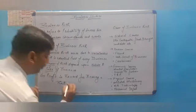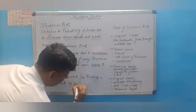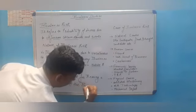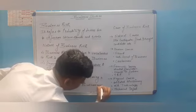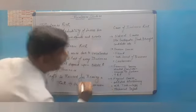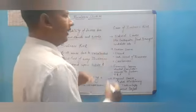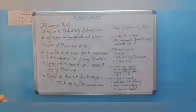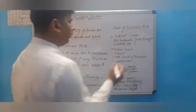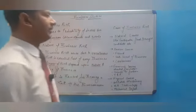So, the four points of business risk are: business risk arises due to uncertainty; risk is an essential part of every business; degree of risk depends on the nature and size of the business; and profit is a reward for bearing risk. Now, we will discuss the causes of business risk. There are four types: natural causes, human causes, economic causes, and physical causes.